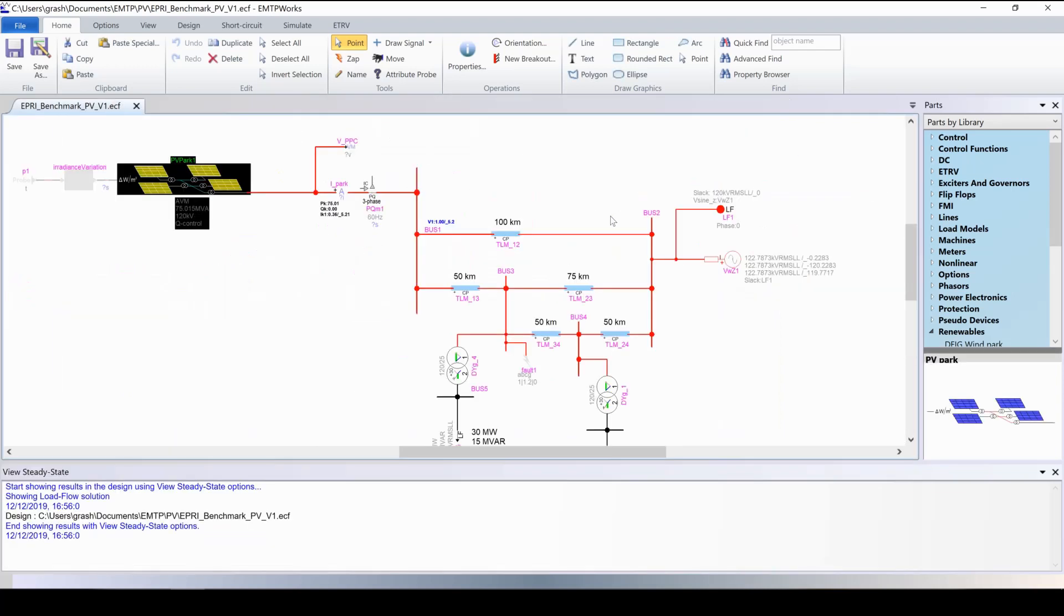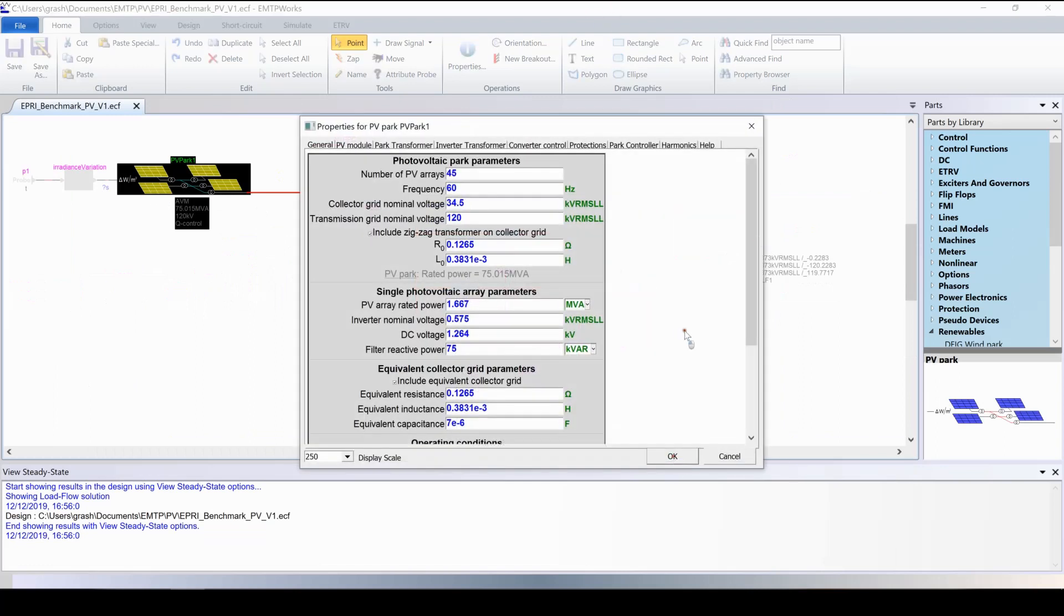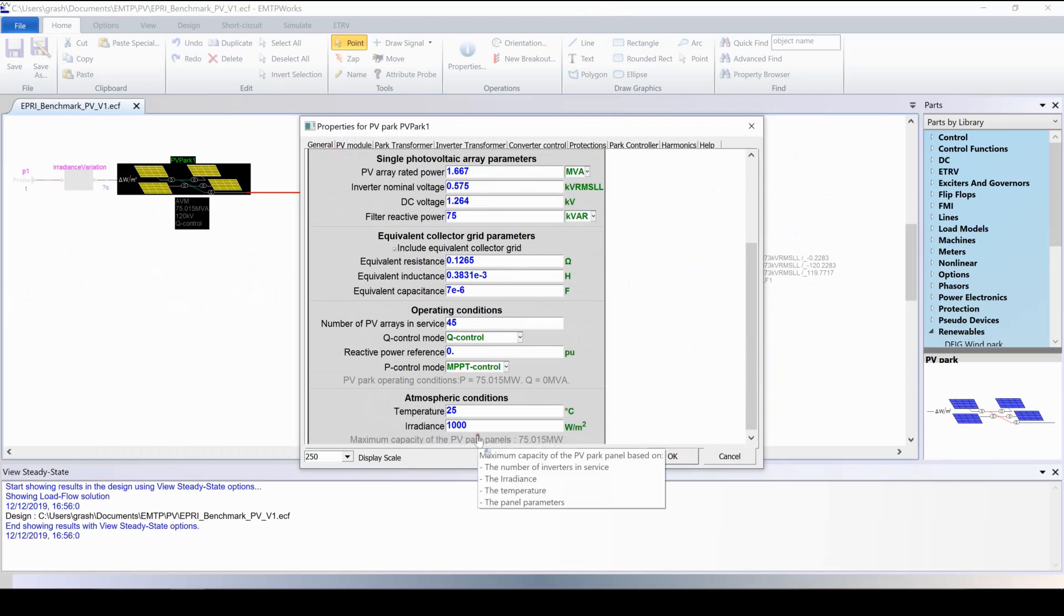For this example, let's vary the irradiance and see the impact of the power generation. The initial irradiance of the park is set in the mask. Right now, the irradiance is 1000 W per meter square. Let's change it and put 800 W per meter square.